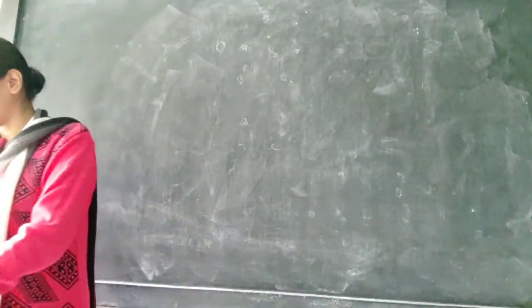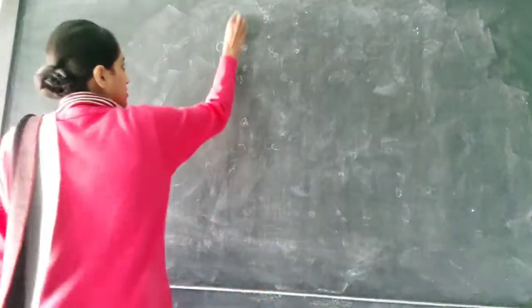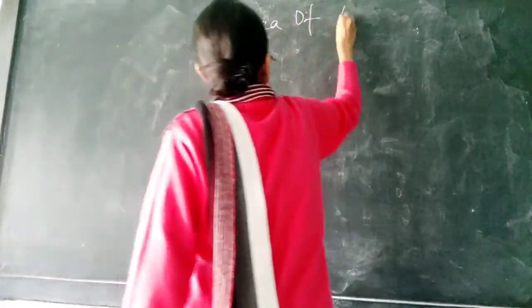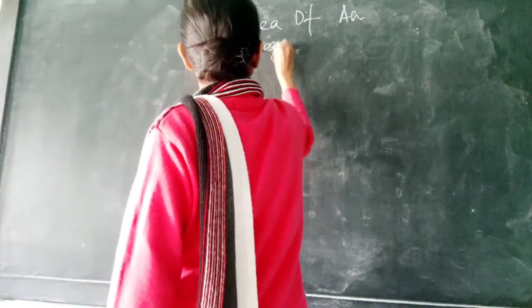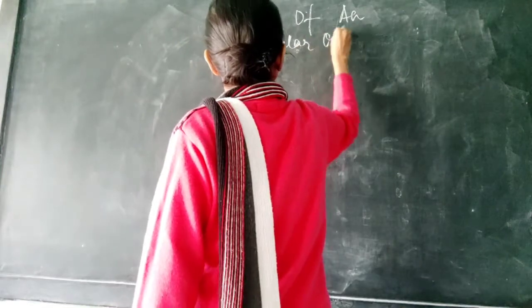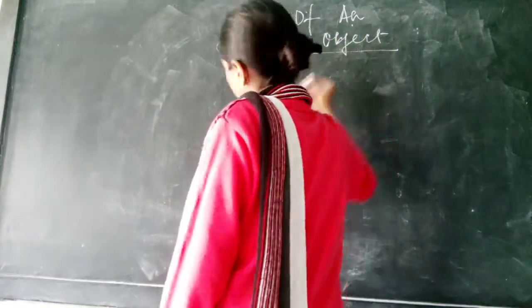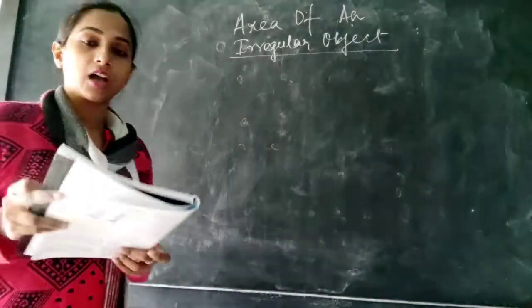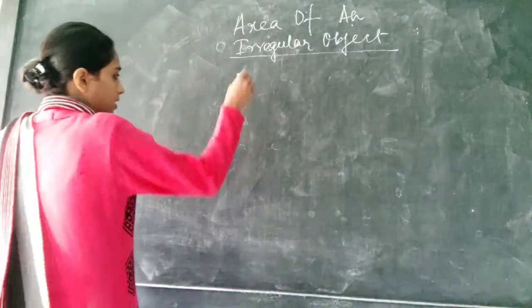Now today we will start with how to measure the area of an irregular object. So for this we need a graph paper. I think you know what a graph paper is. I am telling you.